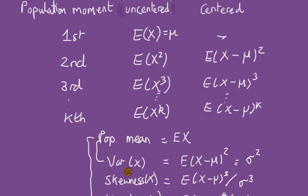First, we need to know what moments are. For a random variable x, the first population moment is the expected value of x. The second population moment is the expected value of x squared, and so on. So the kth population moment is the expected value of x to the power of k.